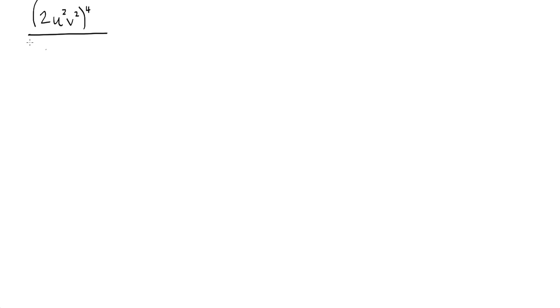Let's jump right into it. We're going to take 2u squared v squared, raised to the fourth power, and divide that by 2u to the fourth, v to the fourth, times 2uv. So that's our first problem.